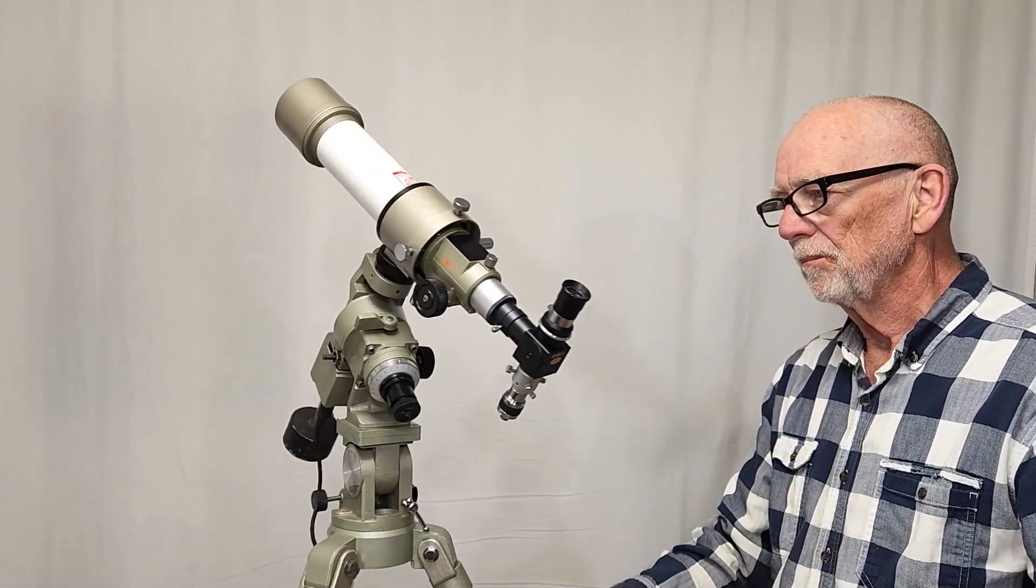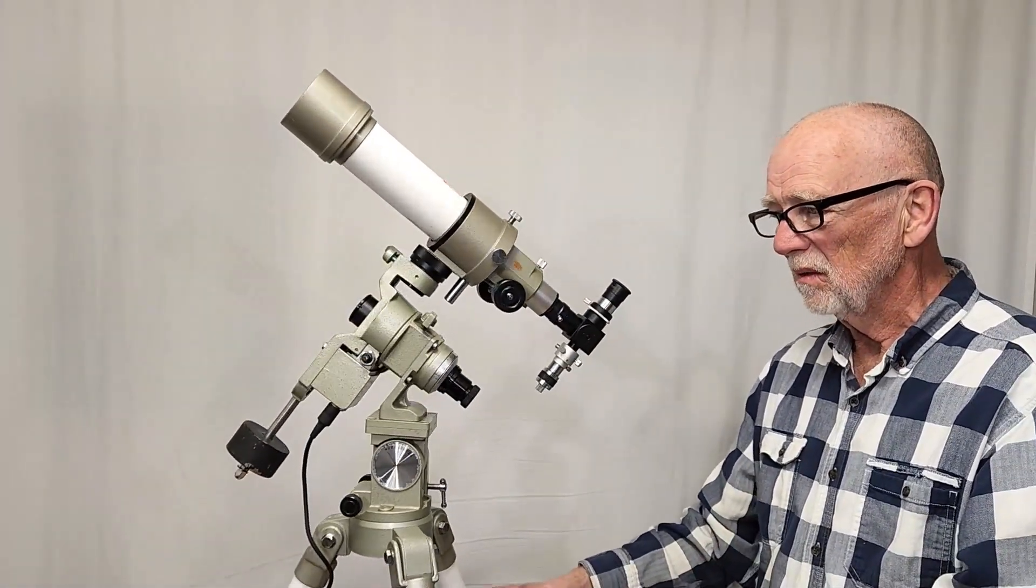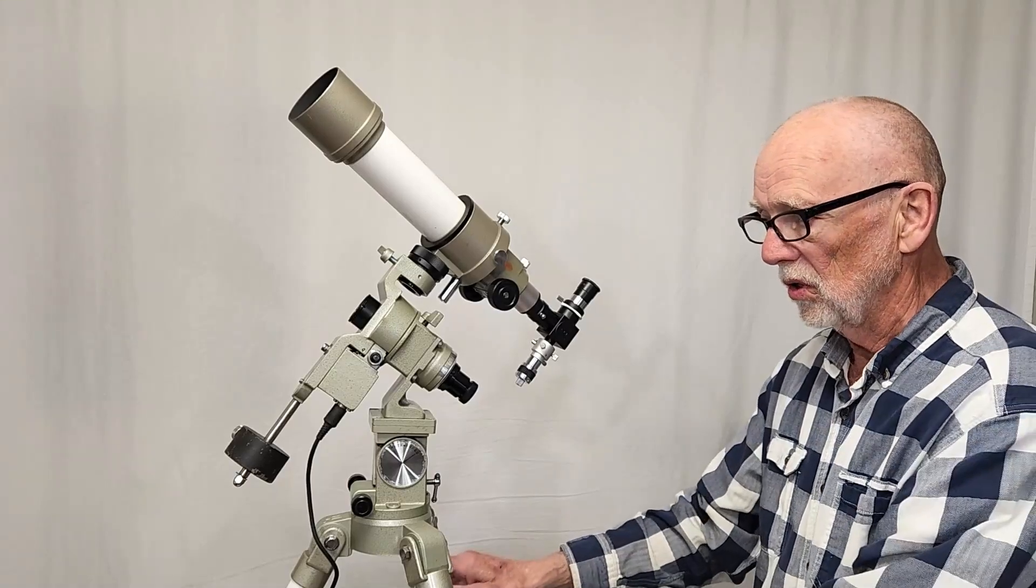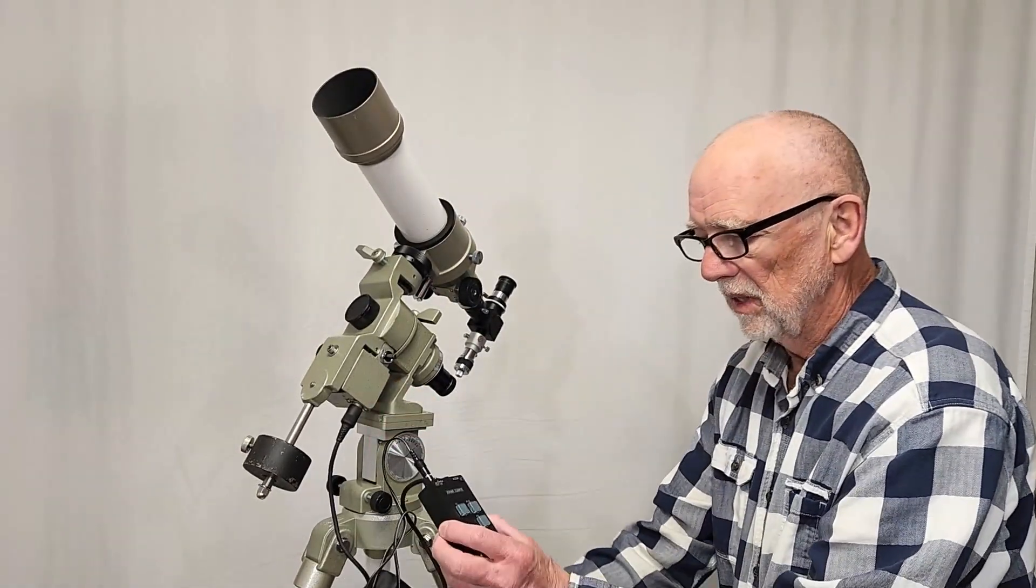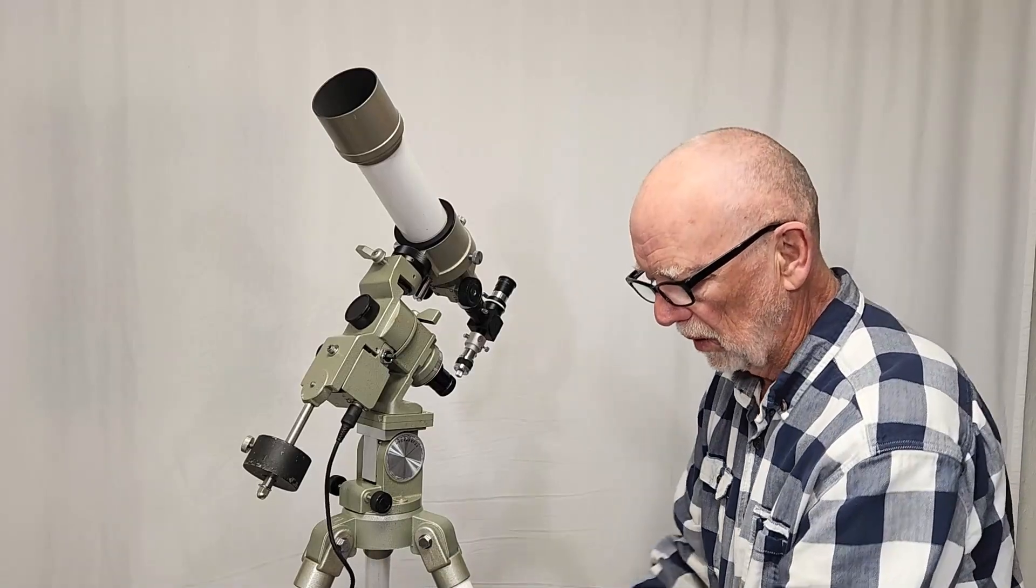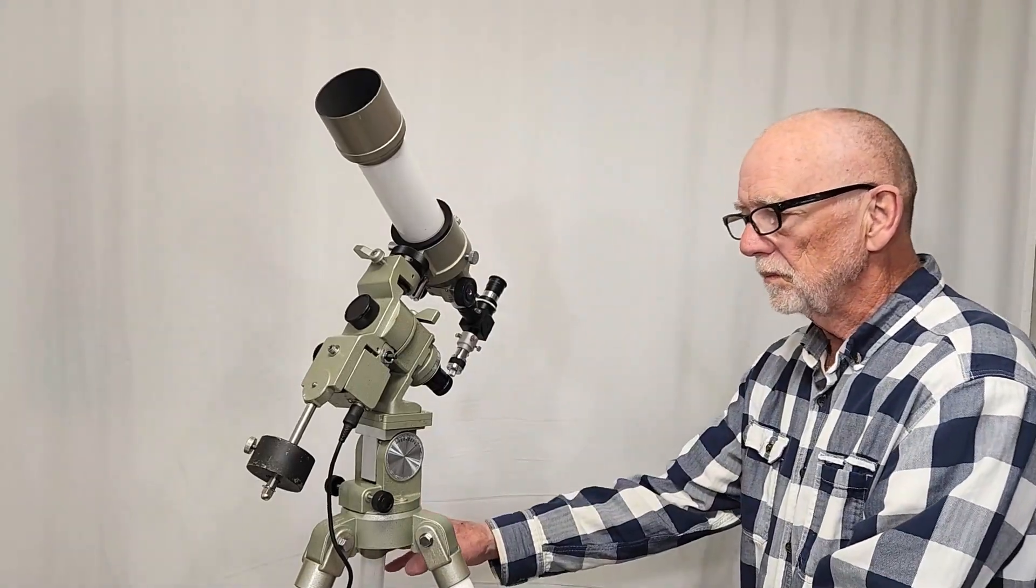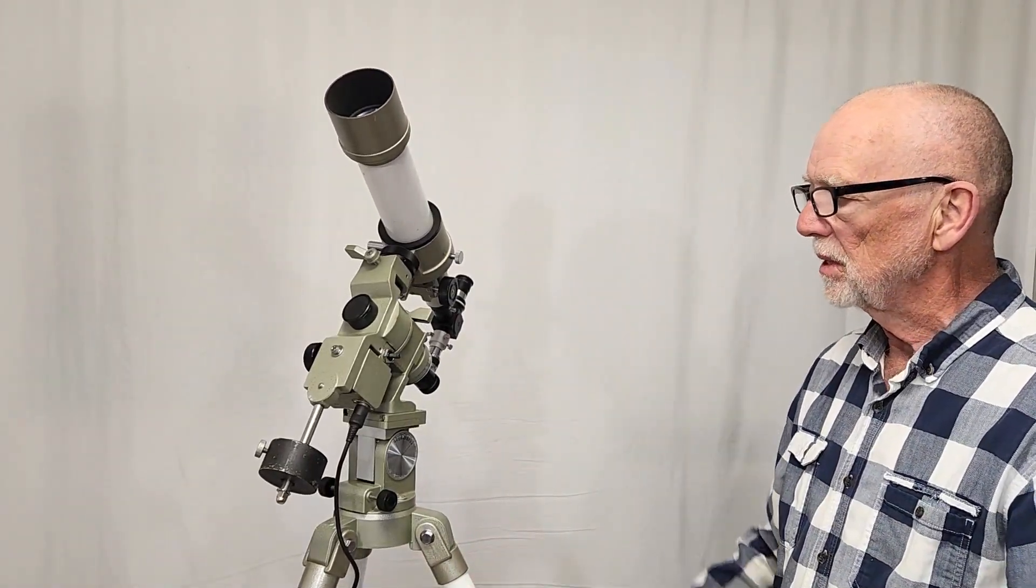So this is a sort of an equatorial mount. It's a tracking mount that's for sure. This has even got a clock drive. Here's the clock drive. Here's the hand control battery pack. It even works. But wait a minute there's something missing here. Oh forgot the camera.